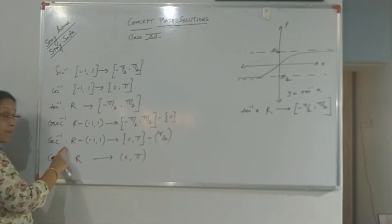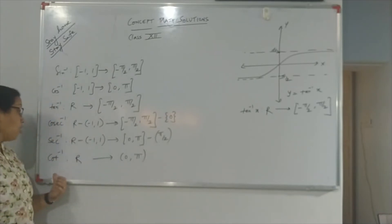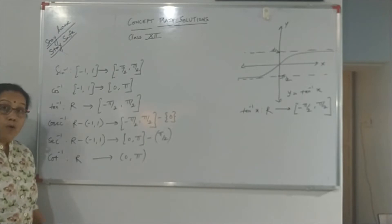This is sec inverse. And this is cot inverse, which is R, from R to 0 to π. Because cot of 0 is not defined, therefore we keep the interval to be open.